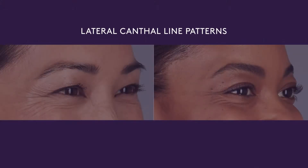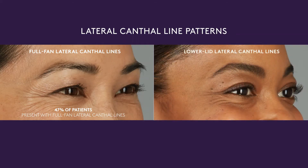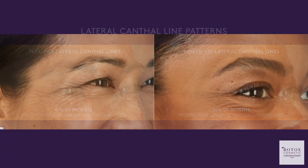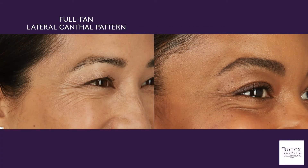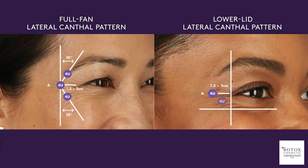You also want to individualize treatment based on the patient's lateral canthal line pattern. The most common is the full fan pattern, presenting as lines across the upper and lower eyelids and through the lateral canthus — 47% of patients present with this pattern. The lower lid fan pattern presents as lines in the lower lid and upper cheek area, occurring in 25% of patients. There are two different injection patterns: the second and third injection sites are above and below the lateral canthus in full fan patients, compared with both below the lateral canthus in lower lid fan patients.